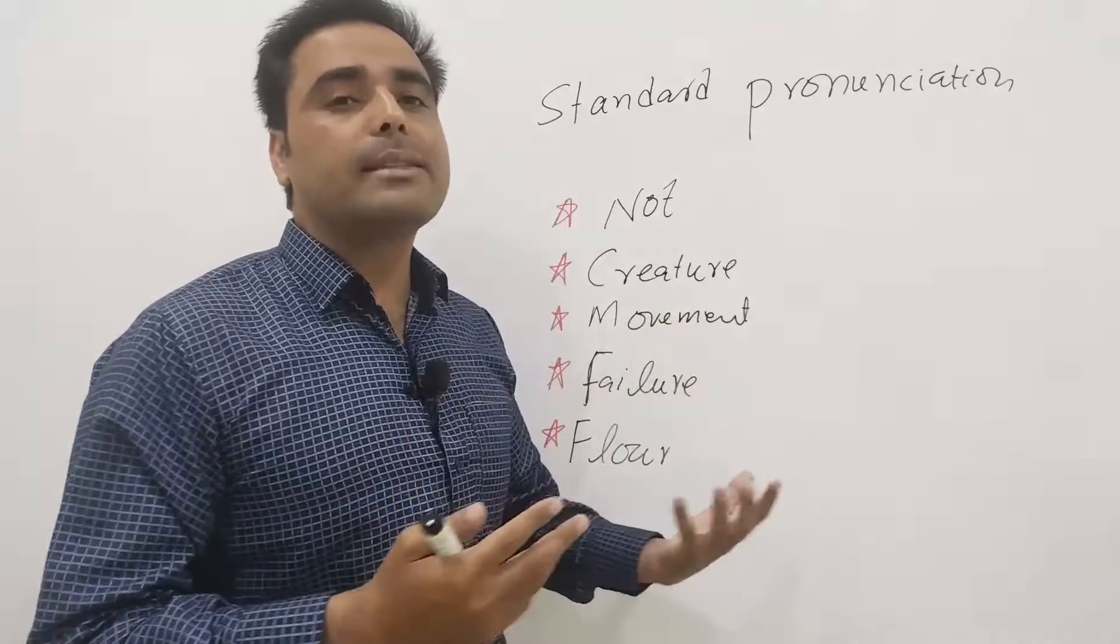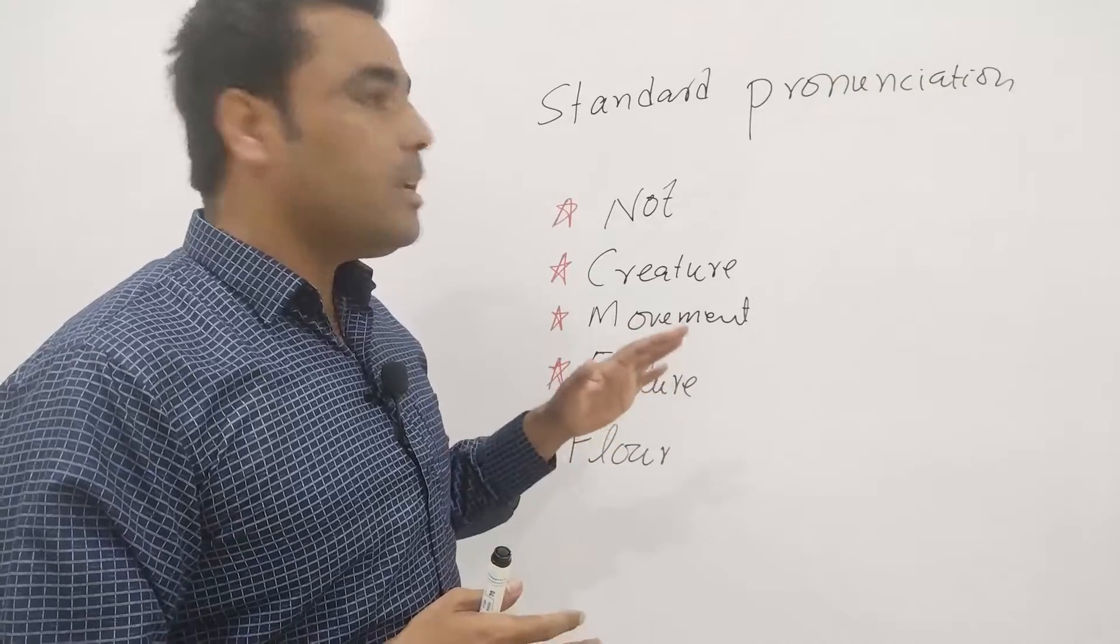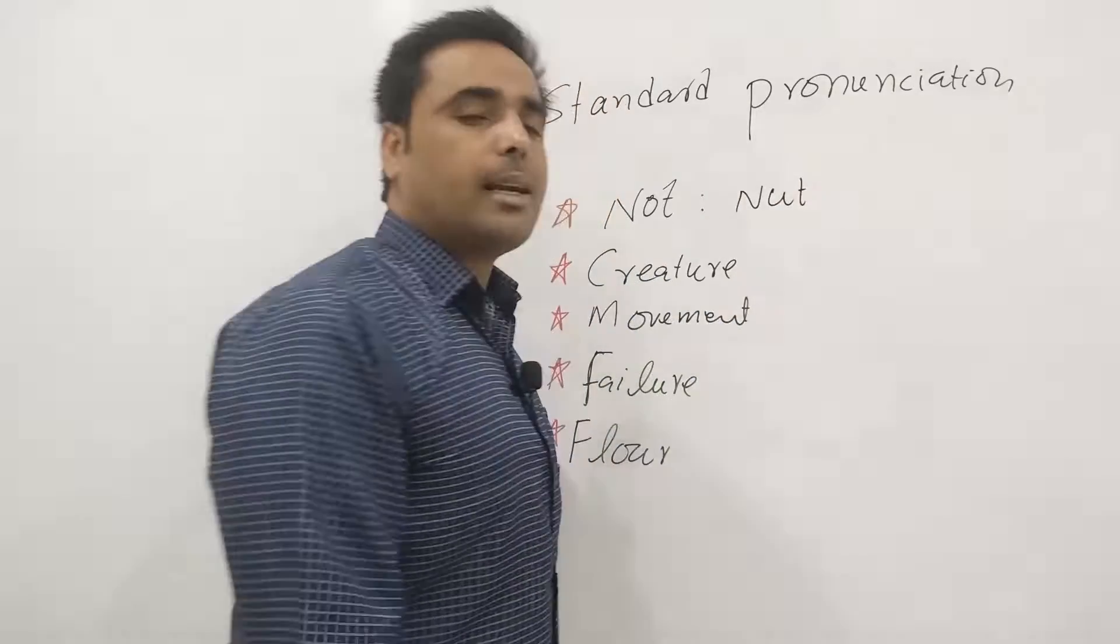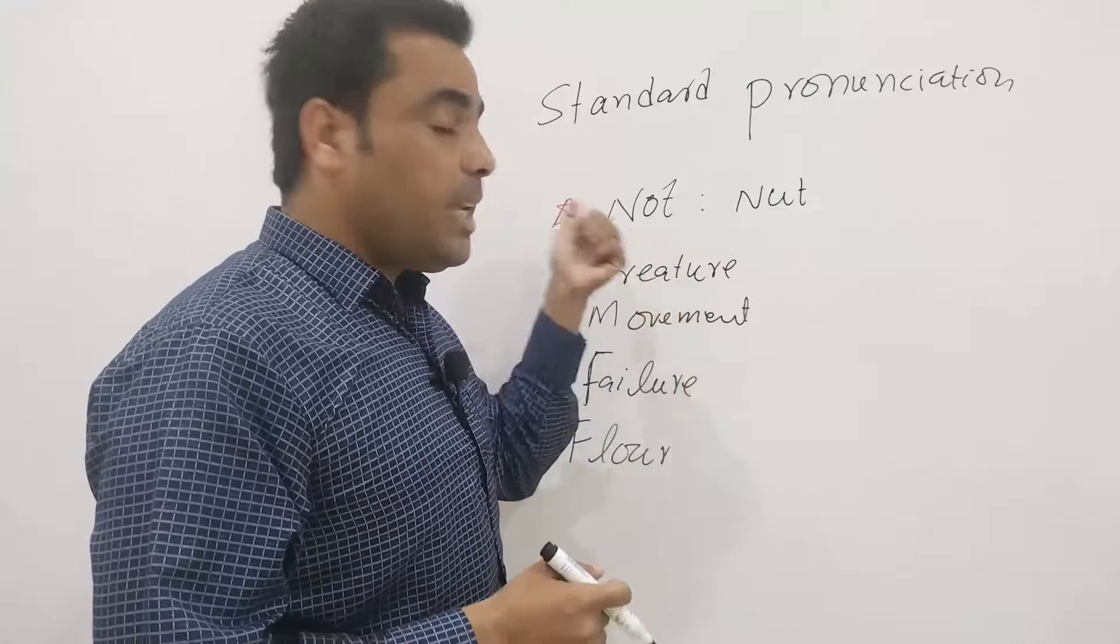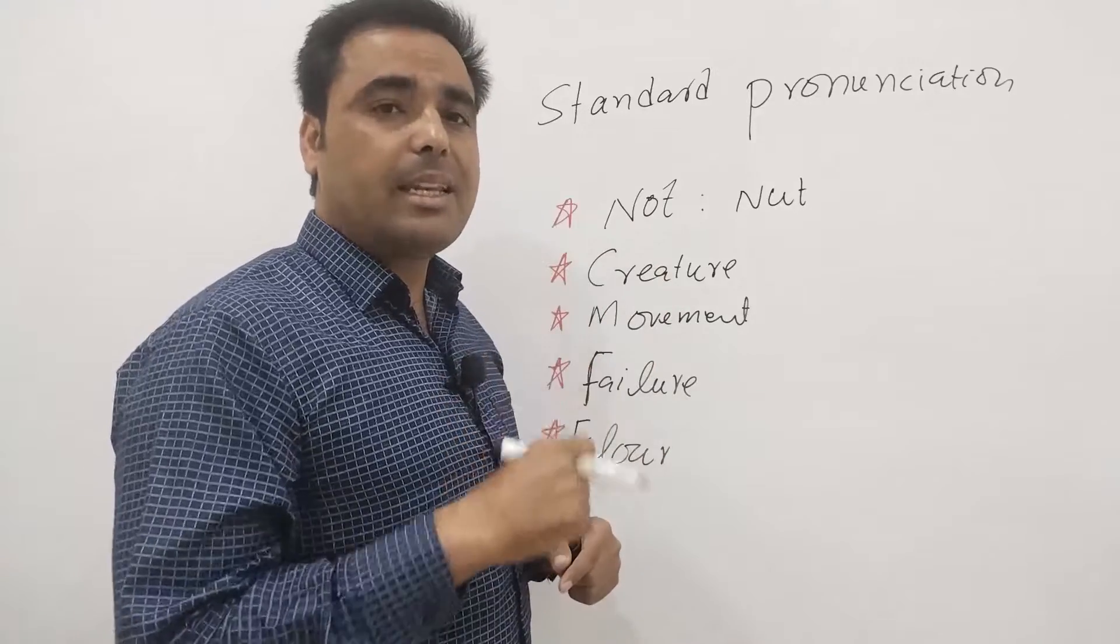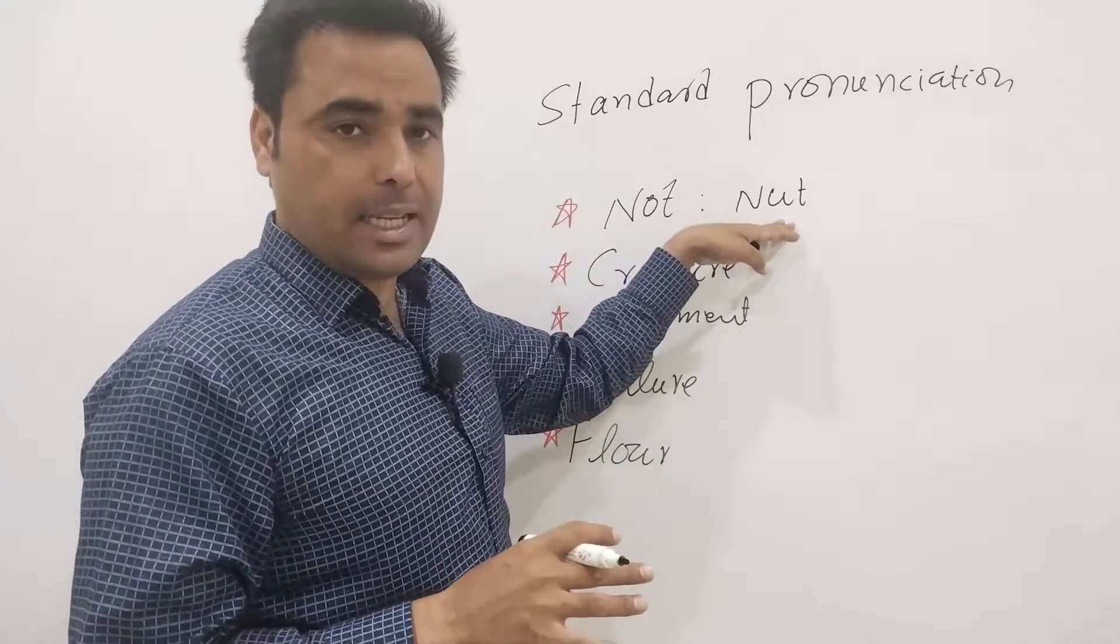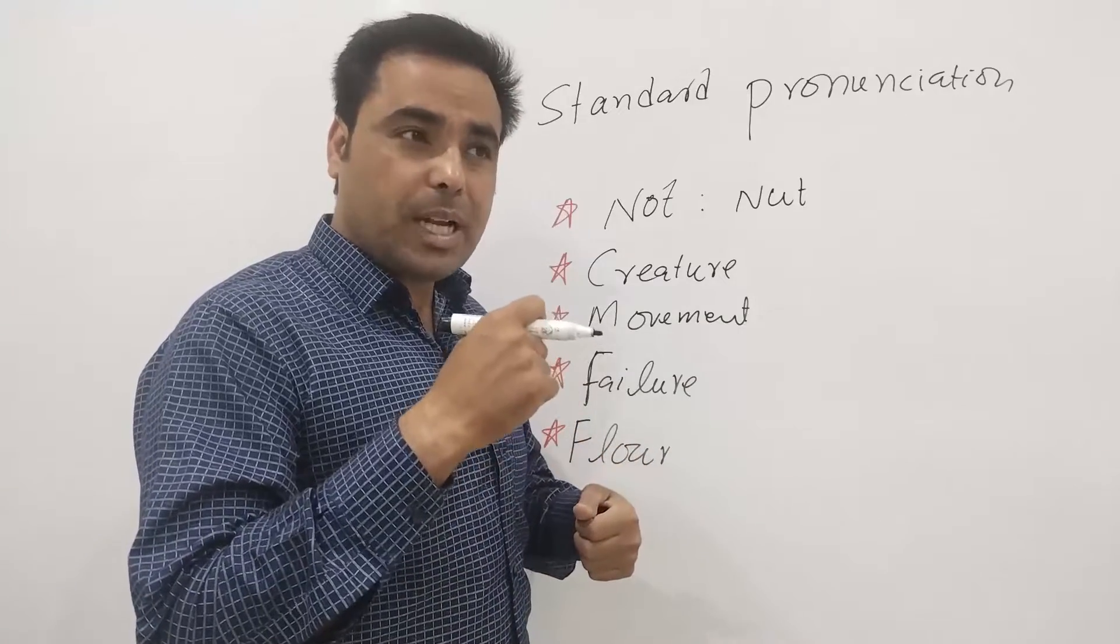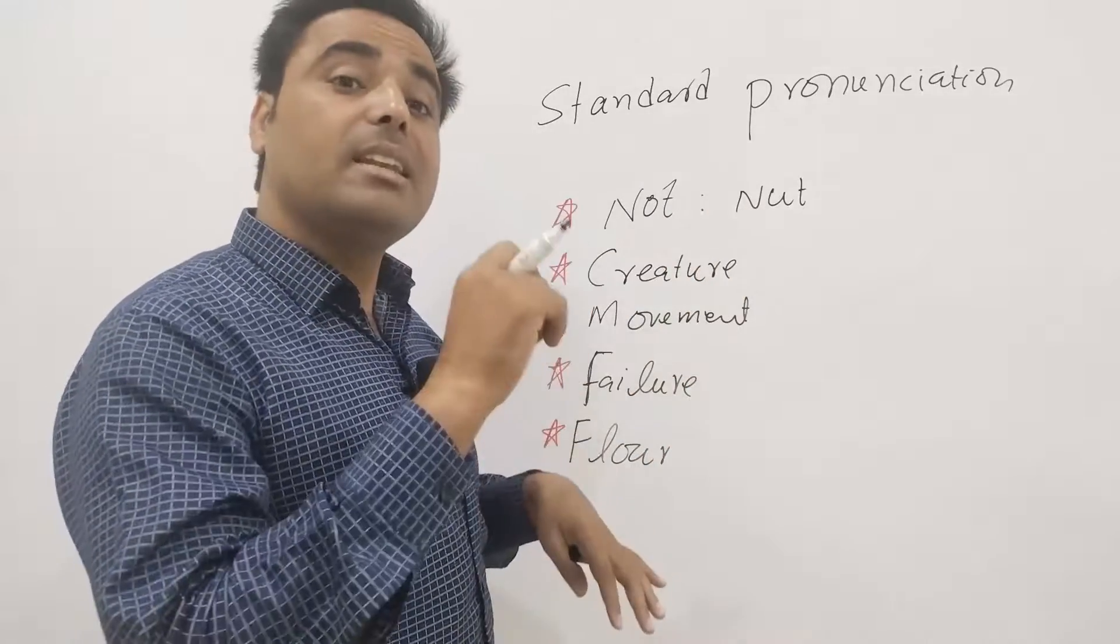So the first word is not. We say nut. When we pronounce it, it's like nut - nut bolt, or dry fruits nut. In British pronunciation it's not, and in American it's nut. So in any accent, in any standard pronunciation, this word is not. We say them the same way, but this word is not. You pronounce it not or nut.